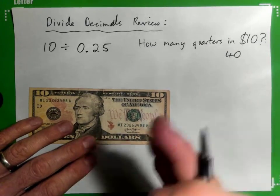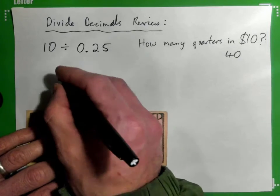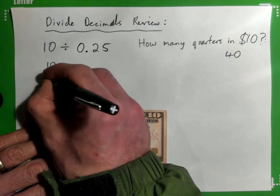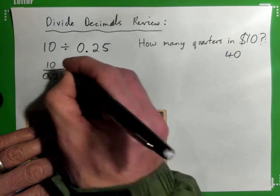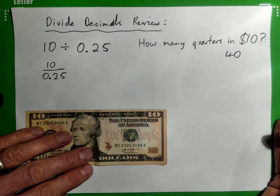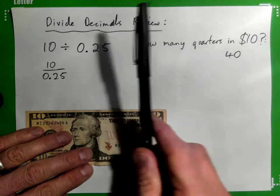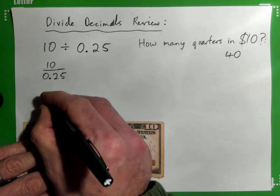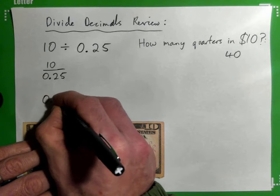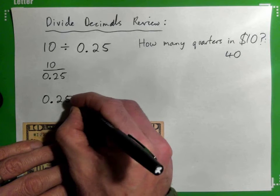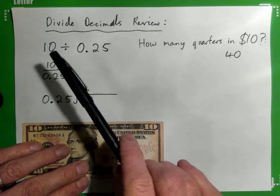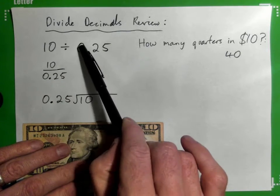So we know the answer should be 40. This would look like, write this down: it's also 10 over 0.25. That's another way of writing that. We can write it this way, and it's also 0.25 into 10. So there's three ways of writing the same division. Are we all clear on that?